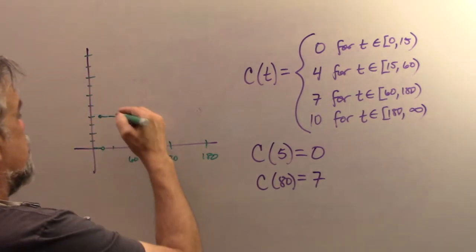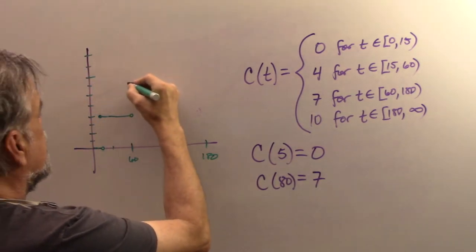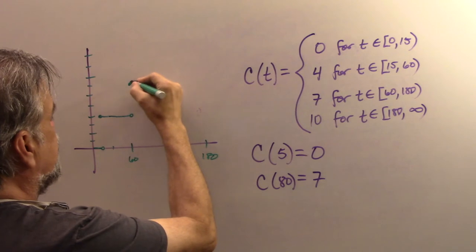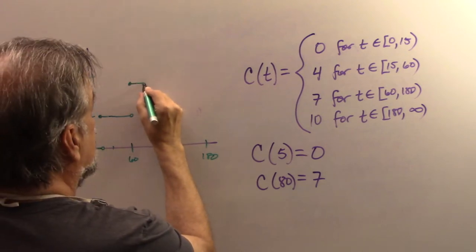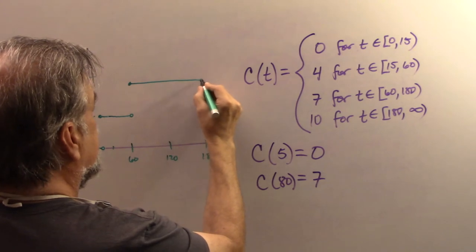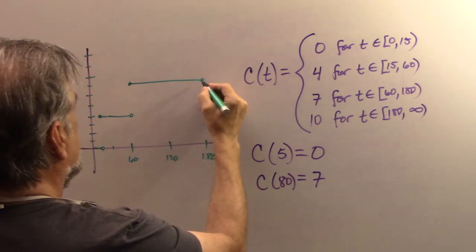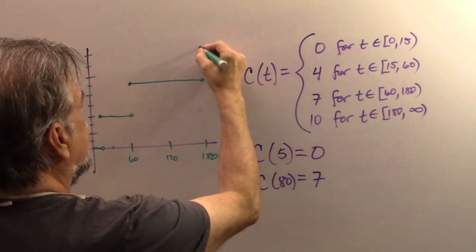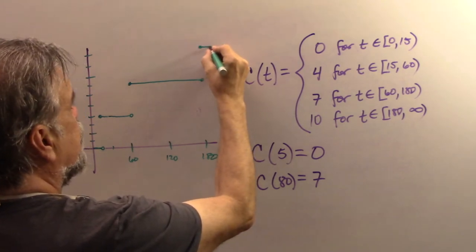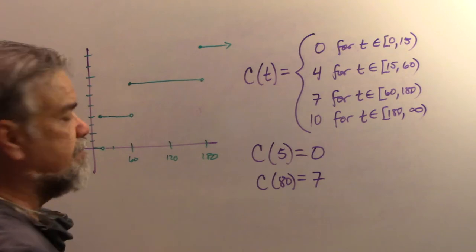And then we're going to jump up to five, six, seven. We'll put a filled in dot there and we're going to go all the way over to 180 and have an open dot and then eight, nine, 10, fill that dot in there. And then it would go, well, indefinitely like that.